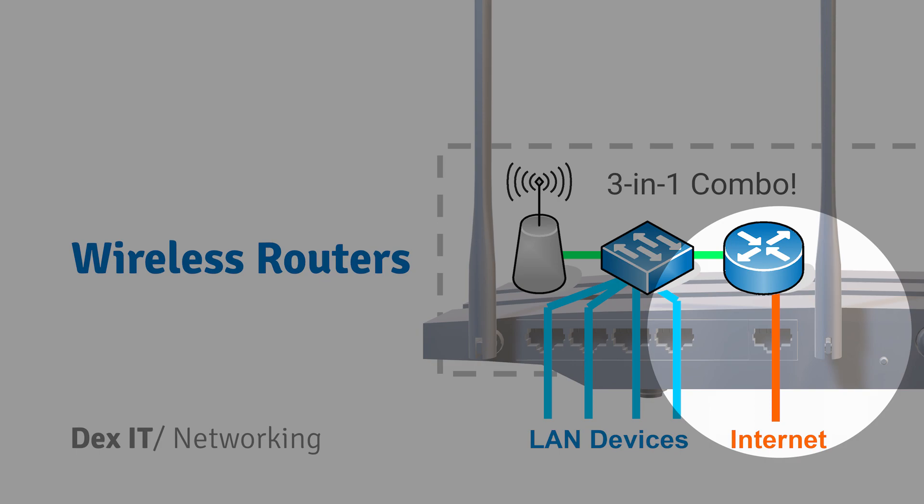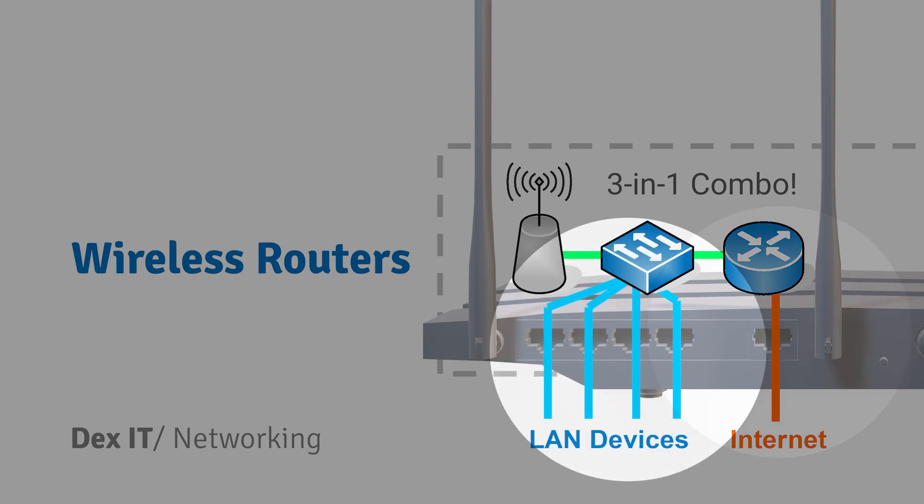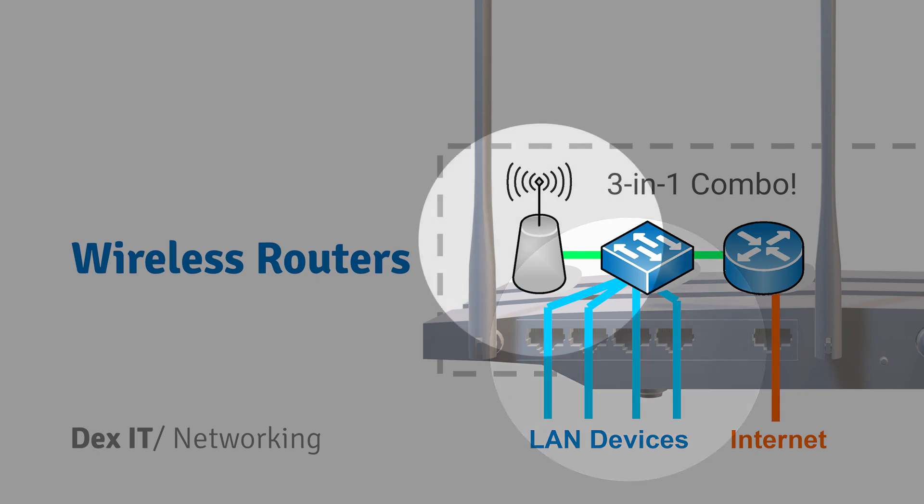Looking at this diagram, logically there are three devices: the router connects to the internet and also to the switch, the switch connects to all the PCs you connect via LAN cable, and internally there's an access point for connecting Wi-Fi devices.